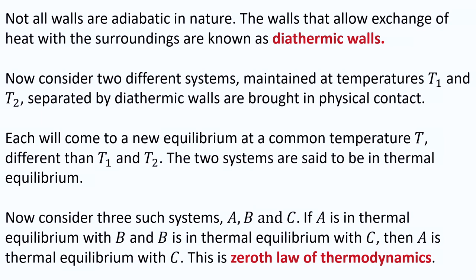Consider two different systems maintained at temperatures T₁ and T₂, separated by diathermic walls and brought into physical contact. The two systems will come to a new equilibrium at a common temperature T, which is between T₁ and T₂. So if T₁ > T₂, the common temperature will be less than T₁ but greater than T₂.